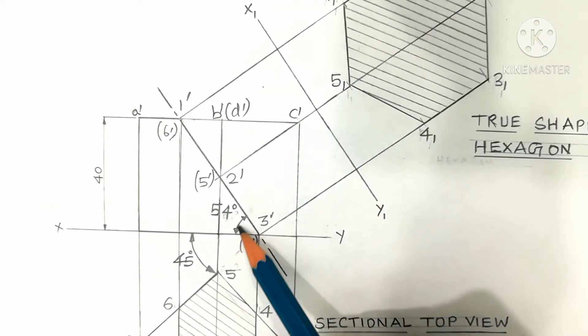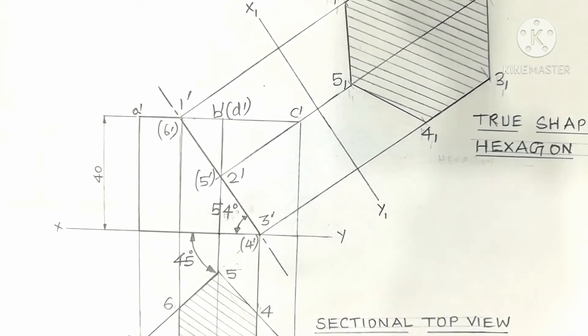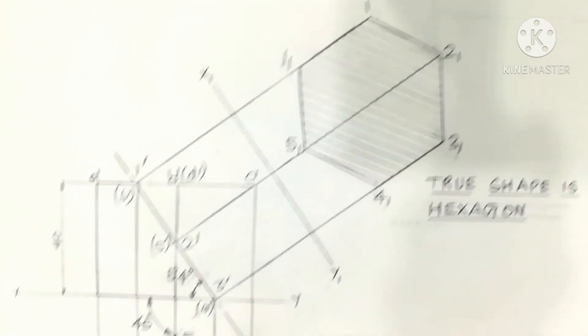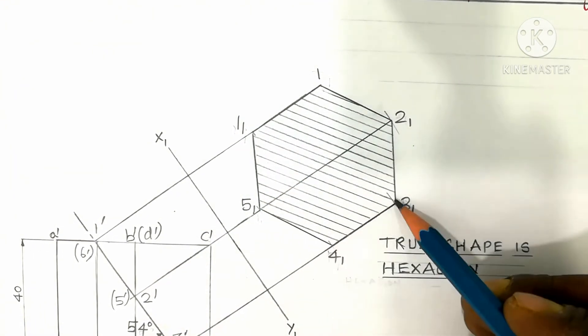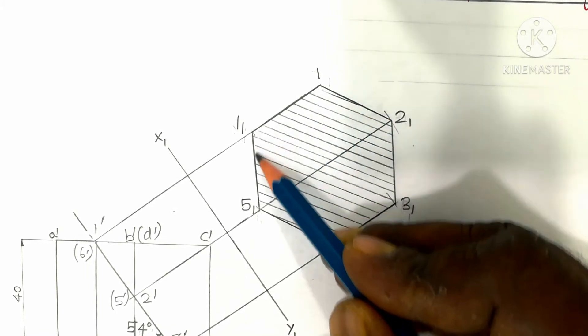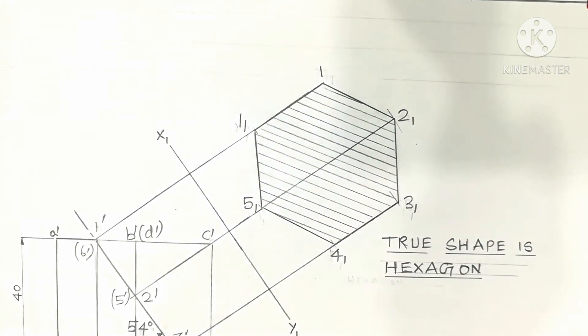54 degrees is the orientation of the cutting plane. At what angle will the section plane cut so the true shape will be a regular hexagon? The cube will cut the hexagon shape. What angle will cut the shape? That is the simple question.